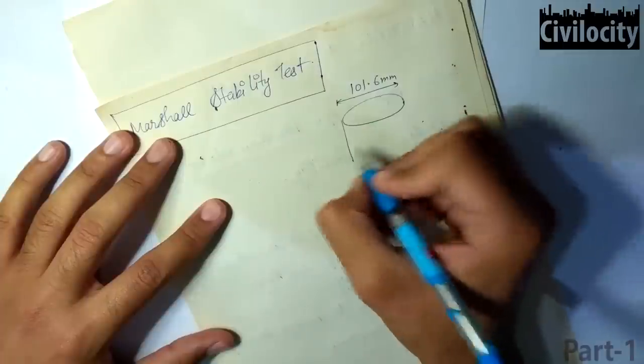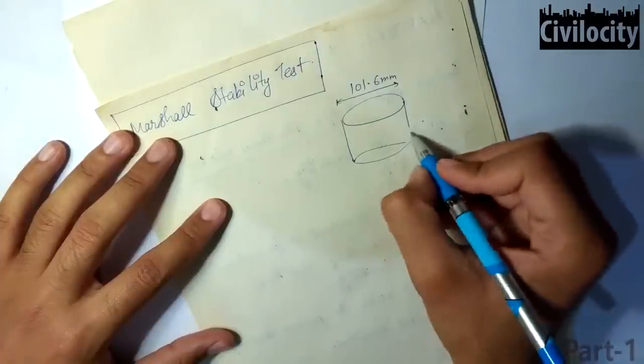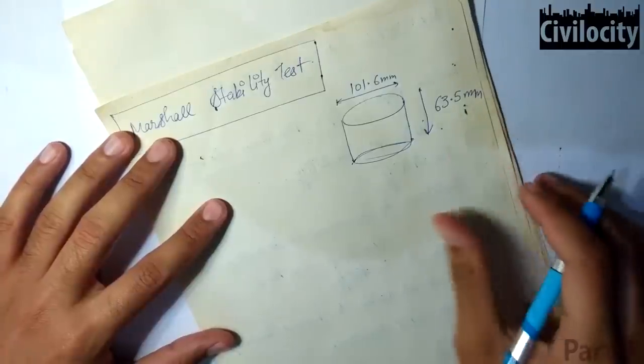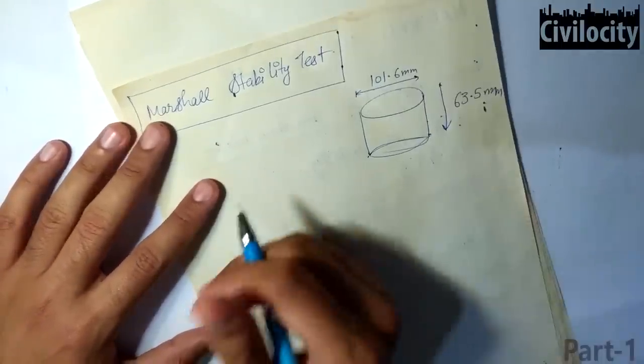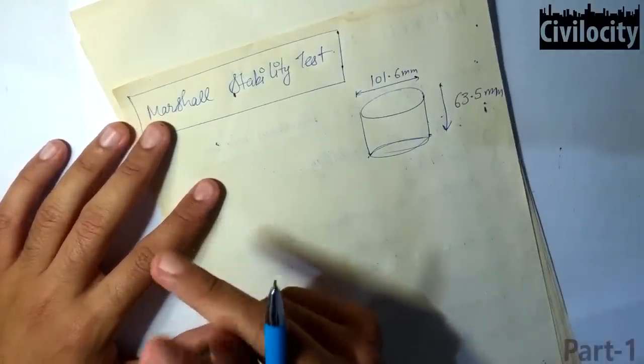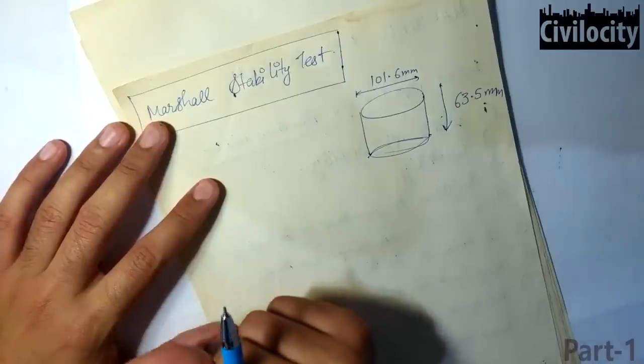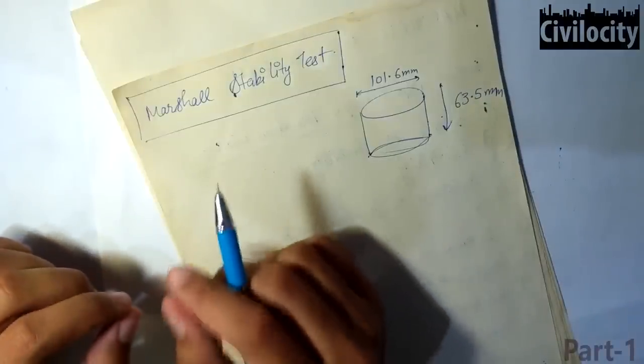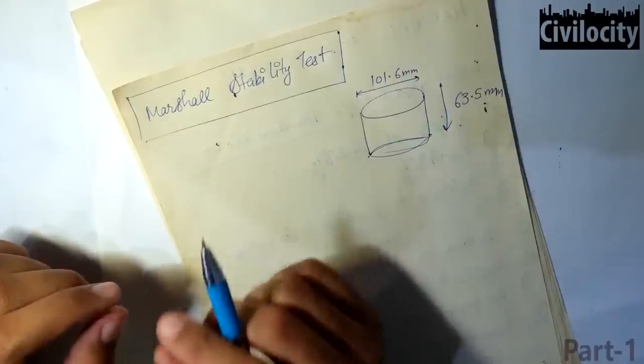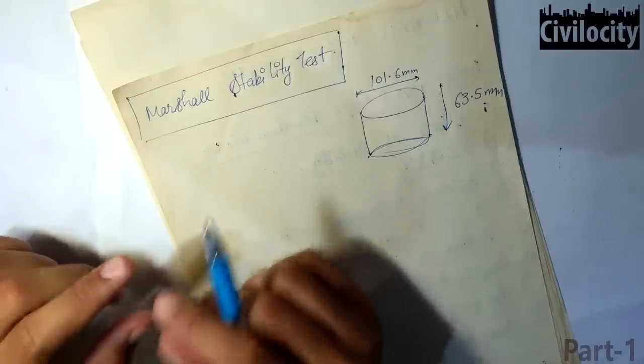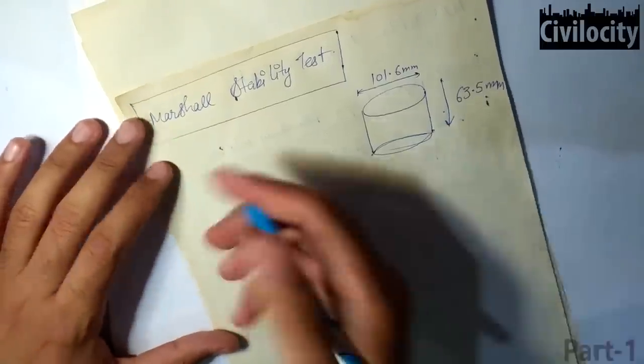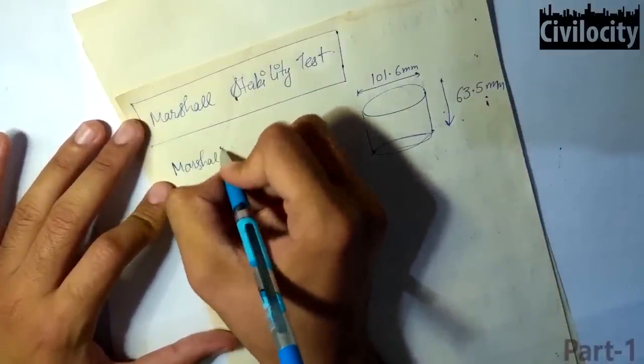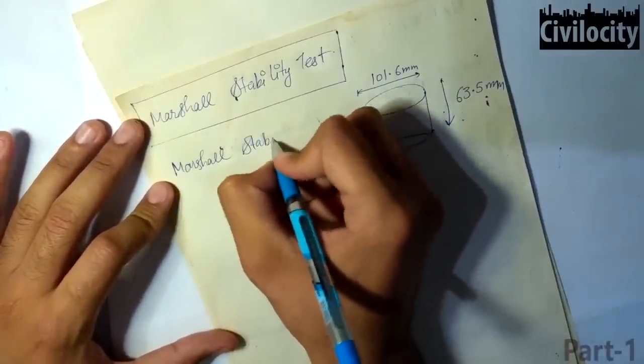In Marshall Mix Design, we prepare a specimen of diameter 101.6 mm and thickness 63.5 mm by compressing it into a cylindrical mold. It is conducted on a compacted cylindrical specimen of bituminous mix. In this test, there are two main terms and these terms are asked so many times in IES and GATE exams. The first one is Marshall Stability.